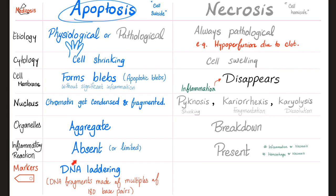In apoptosis, inflammatory reaction is absent, or at least very limited and insignificant. However, in necrosis — tons and tons of inflammation. That's why we always say inflammation and necrosis, hemorrhage and necrosis. Have you ever heard of hemorrhage and apoptosis? Never.